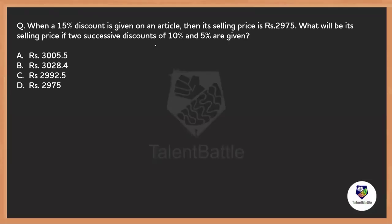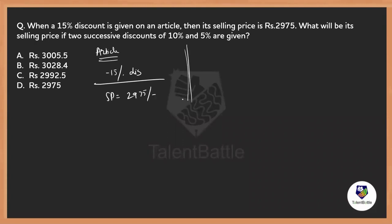Let's solve this question from profit and loss. When a 15% discount is given on an article, its selling price is 2975. What will be its selling price if two successive discounts of 10% and 5% are given? So there is an article — if 15% discount is given, the selling price is 2975 rupees. The question asks: on the same article, if successive discounts of 10% and 5% are given, what is the new selling price?